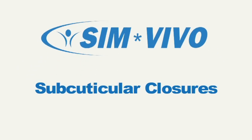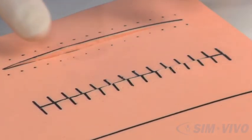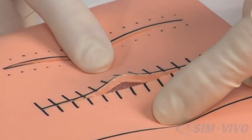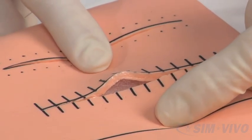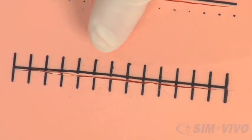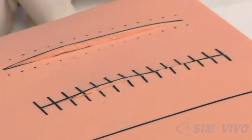Right now we're going to show you a subcuticular suture. The benefit of a subcuticular suture is that we can close the wound without having any sutures appear on the skin. With the incisions already made, notice the cross hatches. These cross hatches will help you space the subcuticular sutures as they are placed.